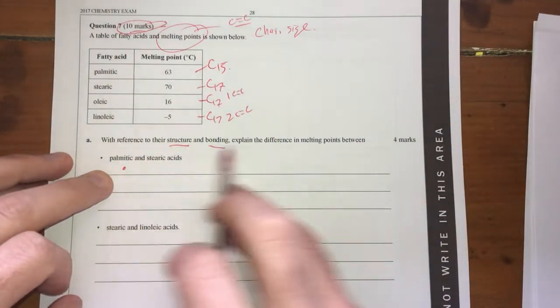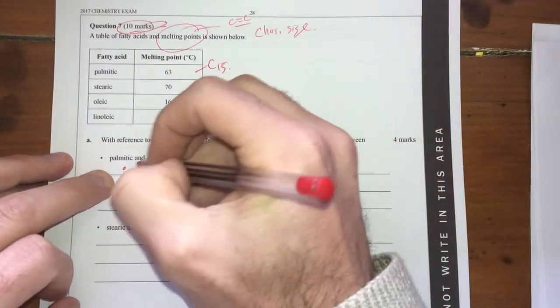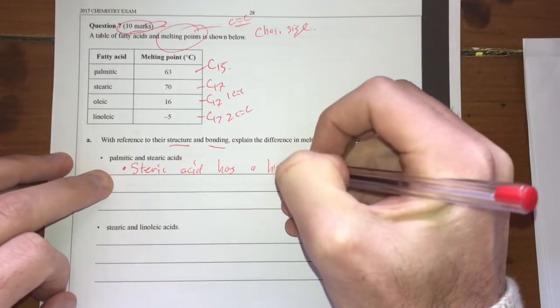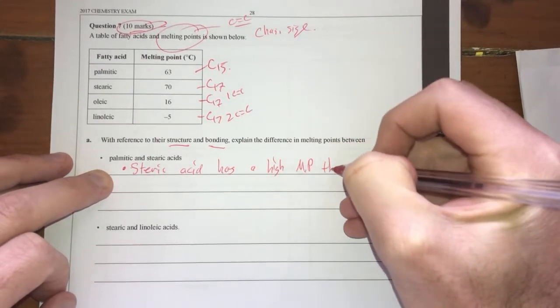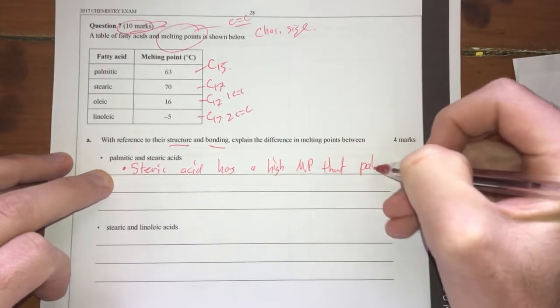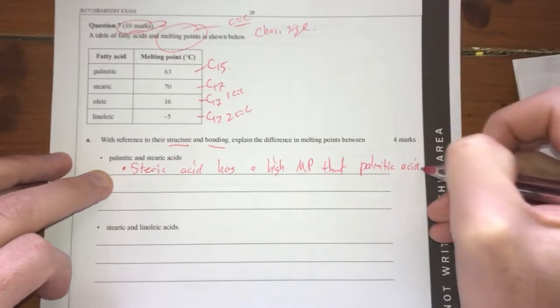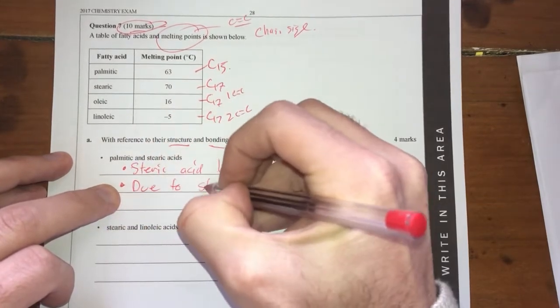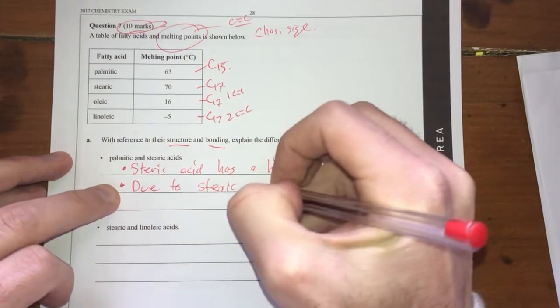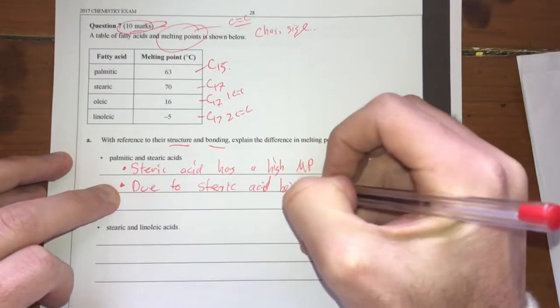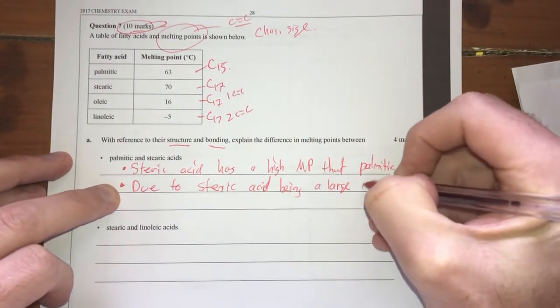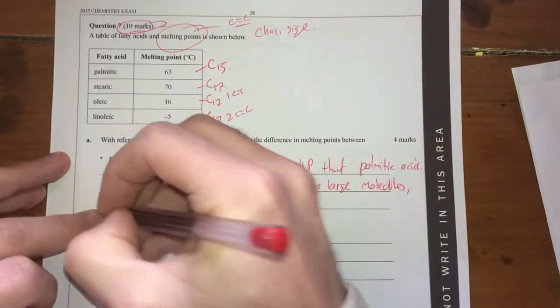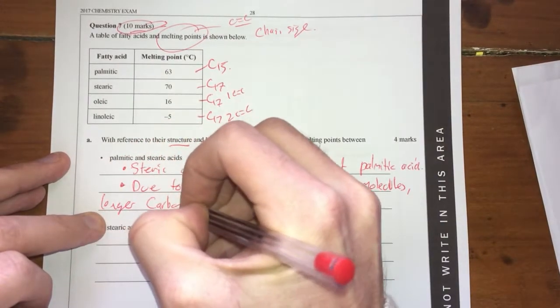So therefore, what we're going to say is the difference here is the fact that stearic acid has a higher melting point than palmitic acid. I'm going to say why this is due to stearic acid being a larger molecule, slash longer carbon chain.